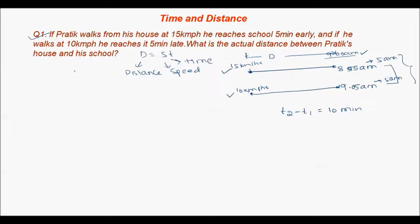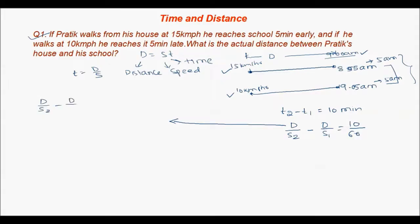Since d = s×t, t = d/s. So t2 minus t1 gives us d/s2 minus d/s1 equals 10 minutes. Converting to hours, that is 10/60. We can derive a formula: taking LCM of s1 and s2, d(s1 − s2)/(s1×s2) = Δt, so d = s1×s2 / (s1 − s2) × Δt.